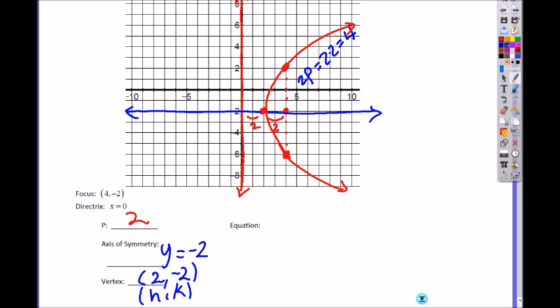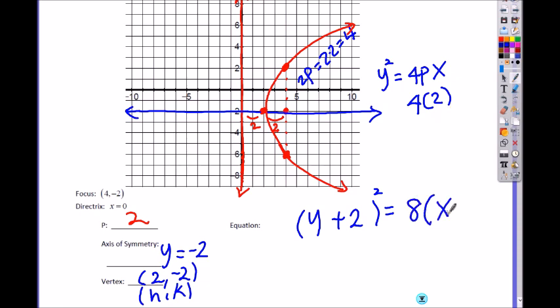So now how do you write an equation? It opens to the right so it is y squared equals 4px. So it is y but you have to subtract your vertex. So you start with y. You have to subtract your k not h. k is the y coordinate of the vertex. So it's y minus negative 2 which is plus 2 squared equals to 4 times p, which is 2, which is 8. And now it's x but x minus h, the x coordinate of the vertex, which is minus 2.